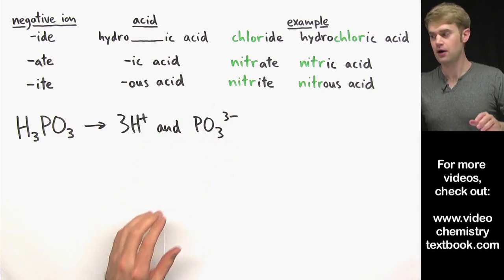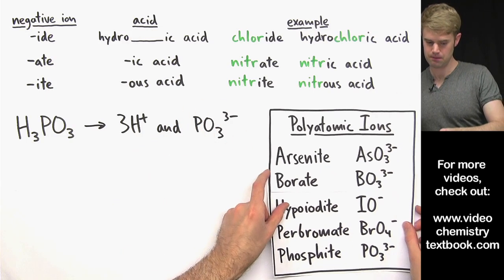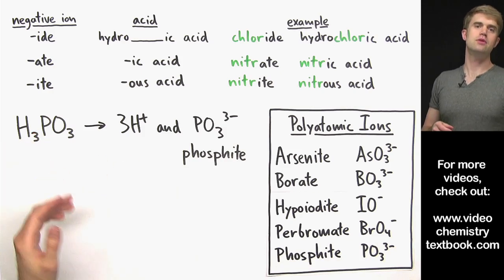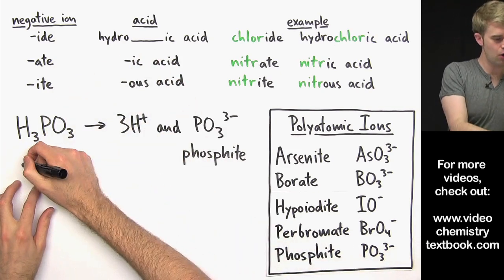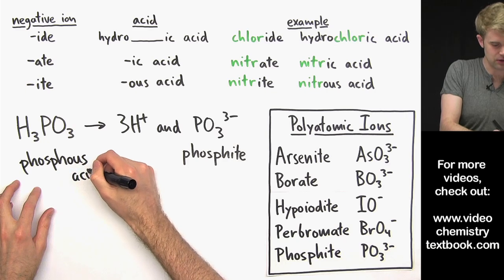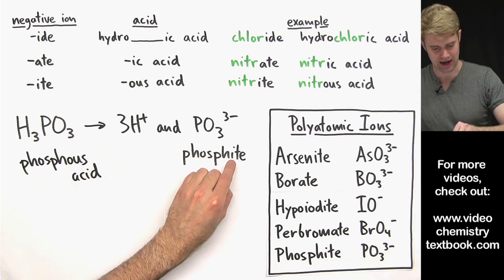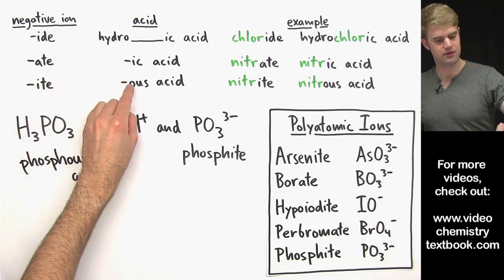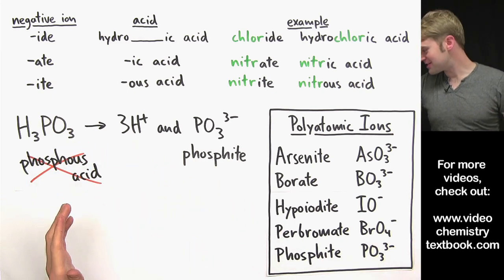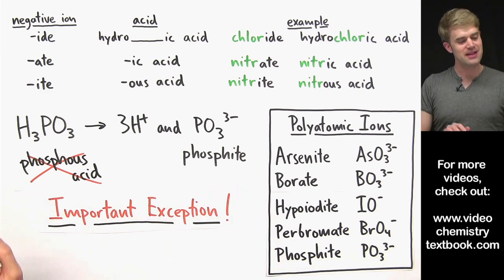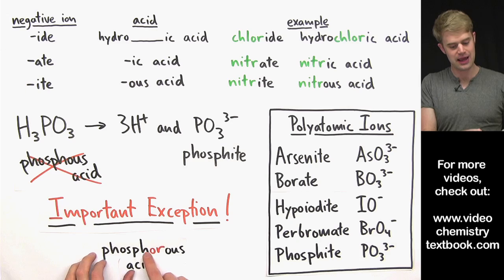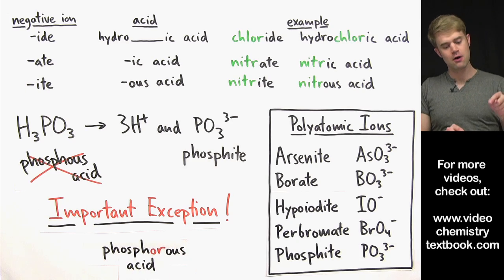This polyatomic ion here, PO3 3 minus, we've got to figure out what its name is. PO3 3 minus, and this is phosphite. How do we name this acid here? Now, based on the rules, you would logically say that we're going to call this phosphos acid, because we have this ending in ITE, and ITE negative ions give us acids that end in OUS. But unfortunately, this is wrong, because phosphorous is an important exception here. The name for this acid is actually phosphorous acid. We have to add this little OR here in between the name and the OUS. So this is called phosphorous acid.